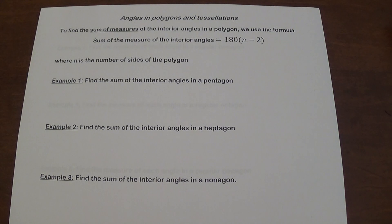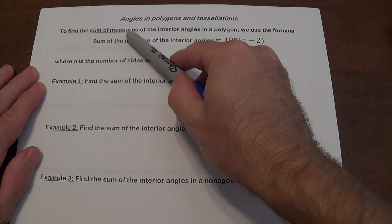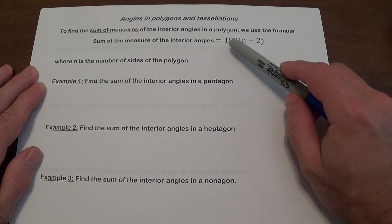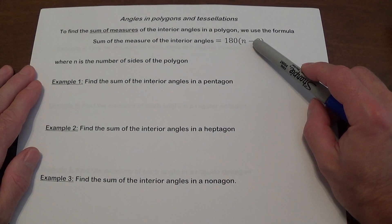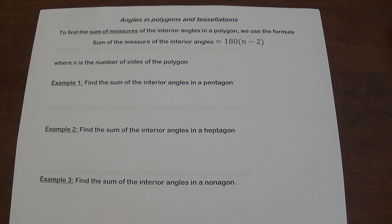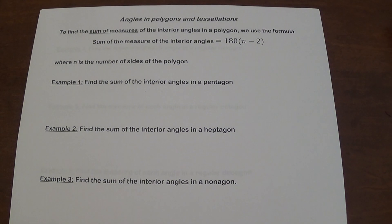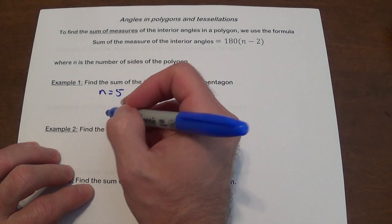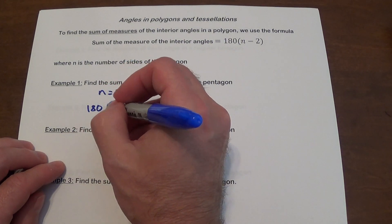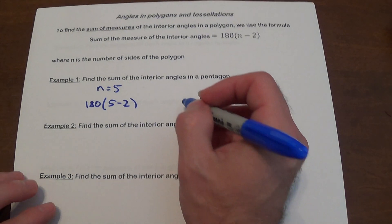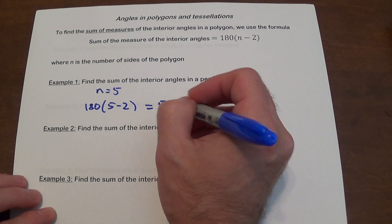In any polygon, the sum of the interior angles can be found using the formula 180 times (n minus 2), where n is the number of sides. For example, a pentagon has five sides, so n is 5. The formula gives 180 times (5 minus 2), which is 180 times 3, equal to 540 degrees.